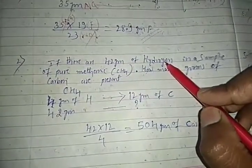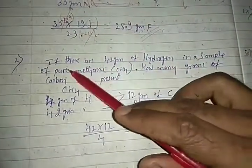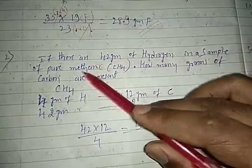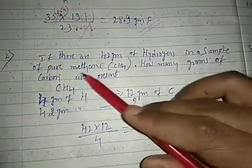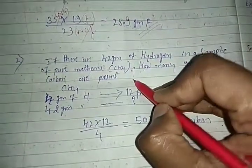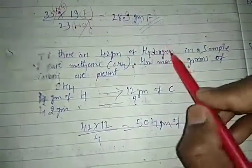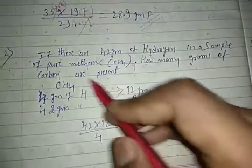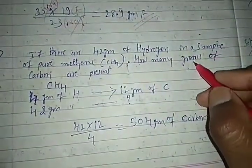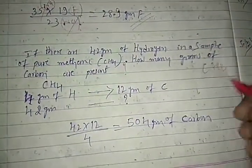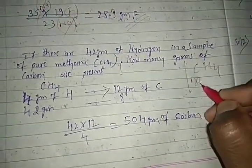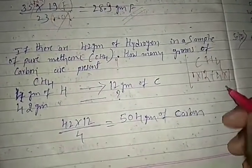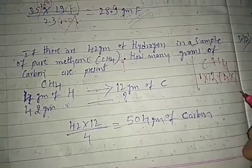In methane CH4, how many grams of carbon are present if 42 grams of hydrogen is present? Let's analyze CH4: there is 1 carbon with atomic mass 12 grams, plus 4 hydrogens each with atomic mass 1 gram, giving 4 grams of hydrogen total. So 4 grams of hydrogen is bonded with 12 grams of carbon.